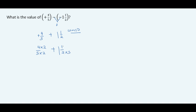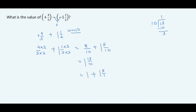That gives us 8 over 10 plus 1 5/10. Adding gives us 1 as the whole number, and 8 plus 5 is 13 over 10. Converting 13/10 to a mixed number: 1 times 10 is 10, subtract from 13 to get 3, so we have 1 and 3/10. Adding the whole number 1 from earlier gives us 2 3/10. Because the signs are the same and positive, the answer is positive 2 3/10.